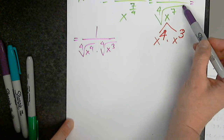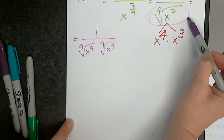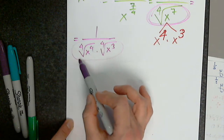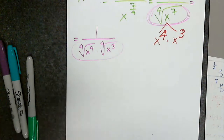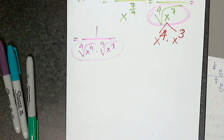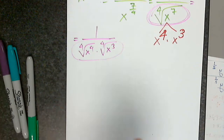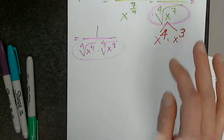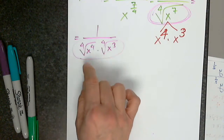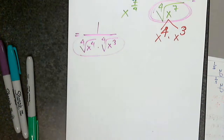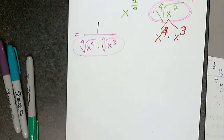So I replaced this by this. Do we agree that the fourth root of x to the 7th is identical with the fourth root of x to the fourth times the fourth root of x to the third? Good.